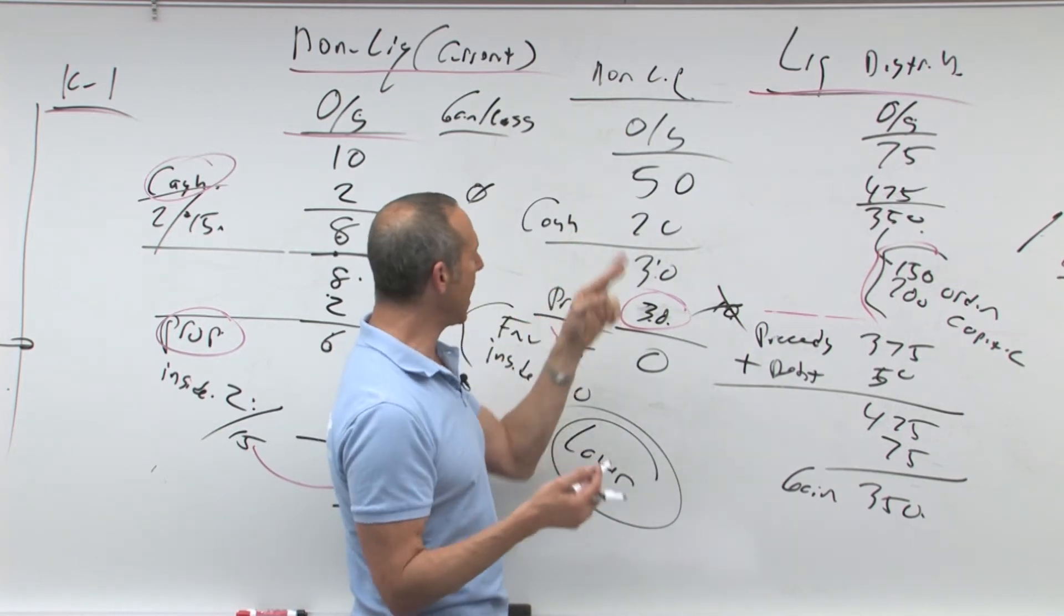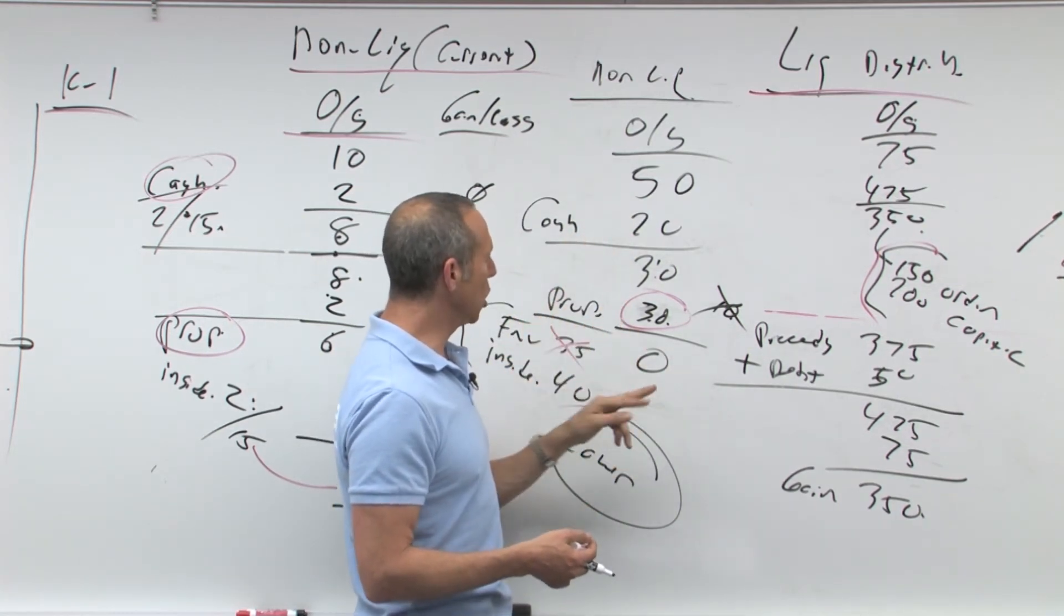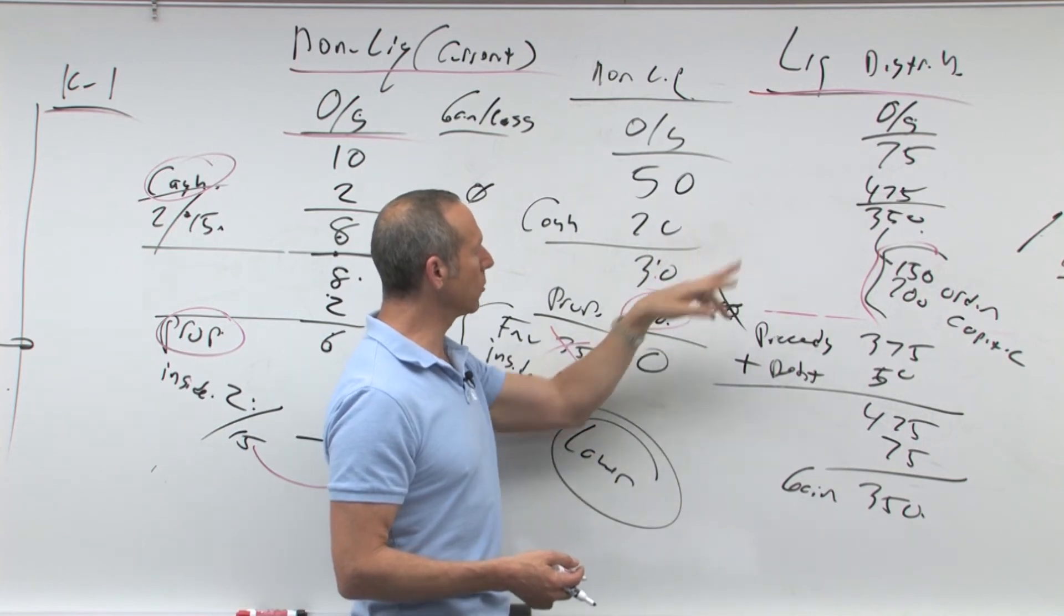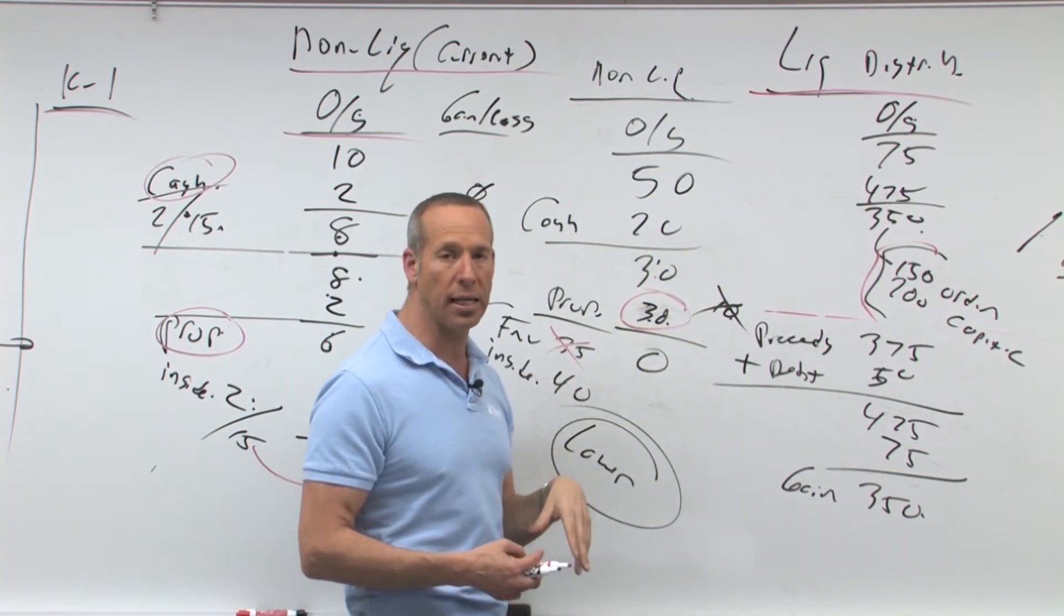Basis in the cash is 20, because cash is cash. Basis in the property is 30. Gain or loss in the property? No. Gain or loss in the cash? No. Basis in the company is zero.